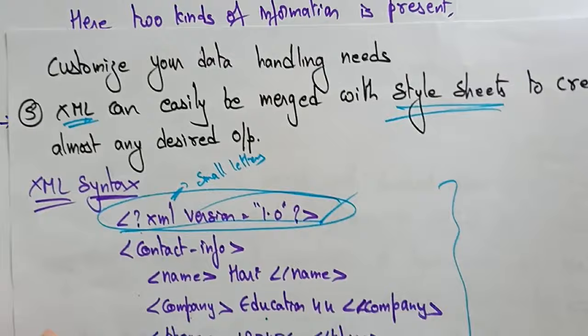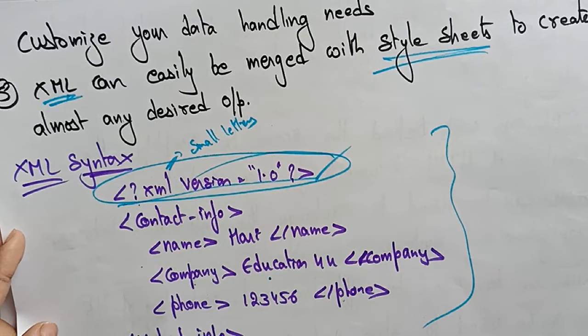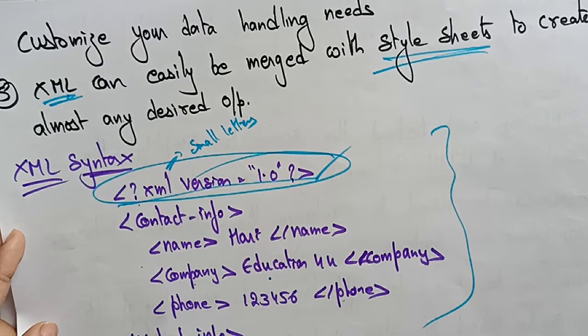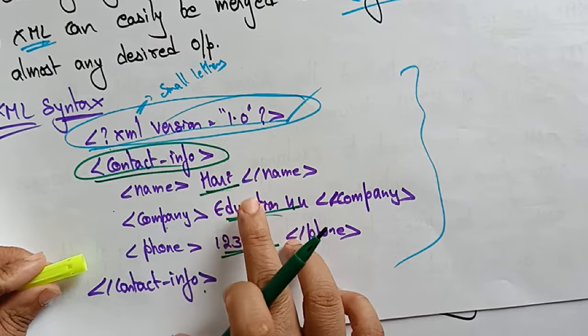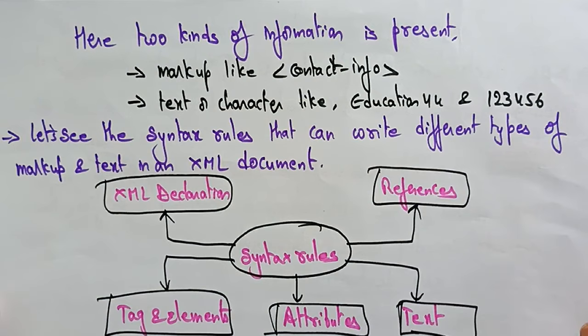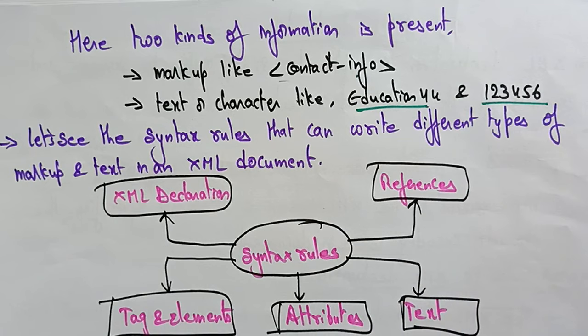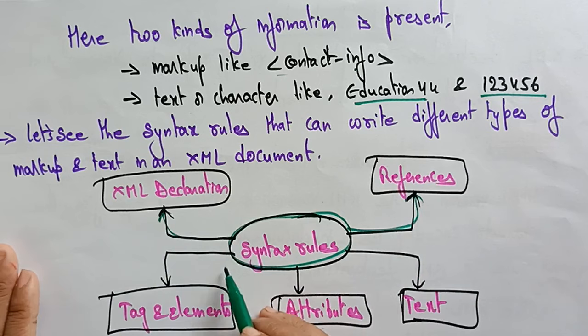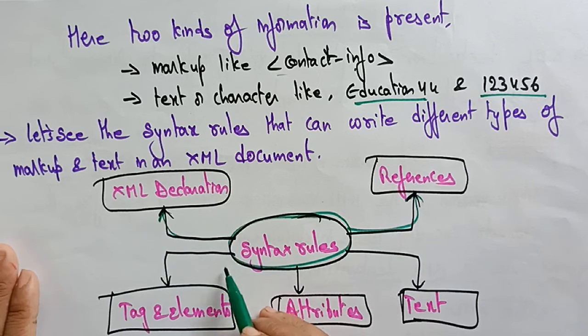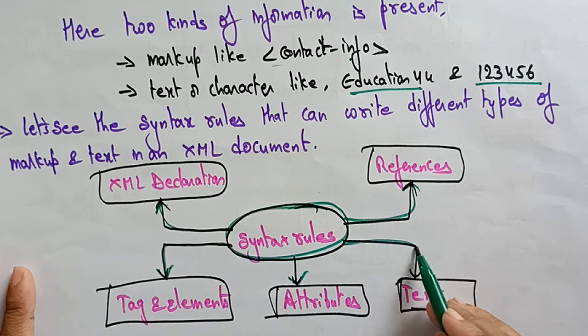You can observe there are two kinds of information present in this XML program. One is markup — for example, the contact information tag is a markup. The other is text or characters — whatever message you have written in between these markup tags is called text or characters. So two kinds of information are present in an XML document: markup like contact information, and text or characters like the company name and contact number.